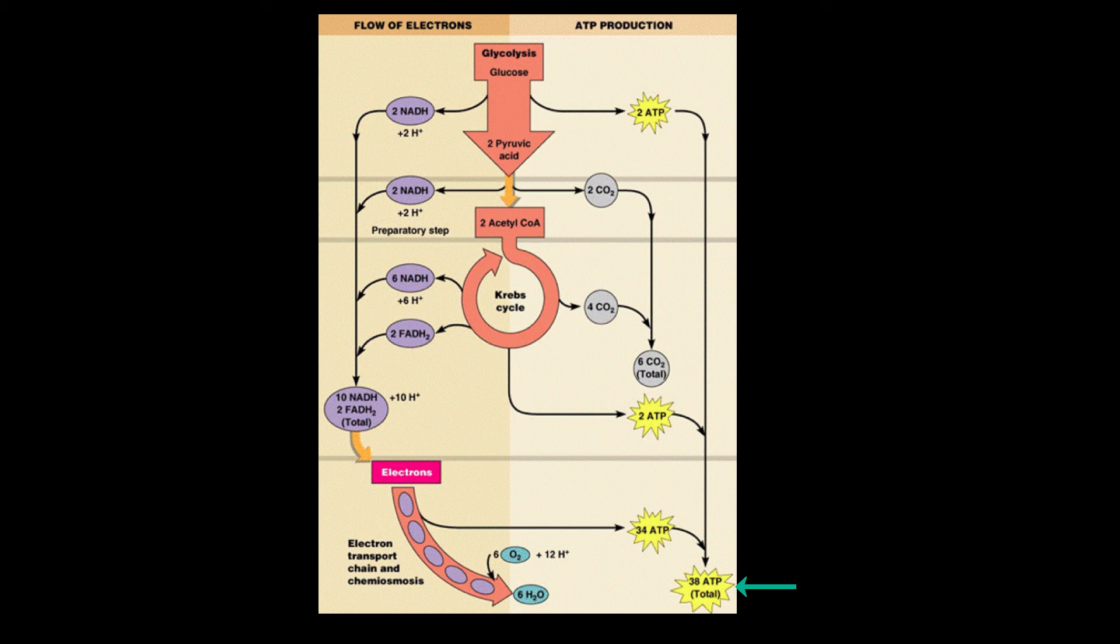This is what prokaryotes get from one molecule of glucose. Eukaryotes only get 36 because they do a change in venue. Because they do the Krebs cycle and the electron transport chain in the mitochondria, it takes energy to move into that organelle. So one molecule of glucose for them only yields 36 molecules of ATP.